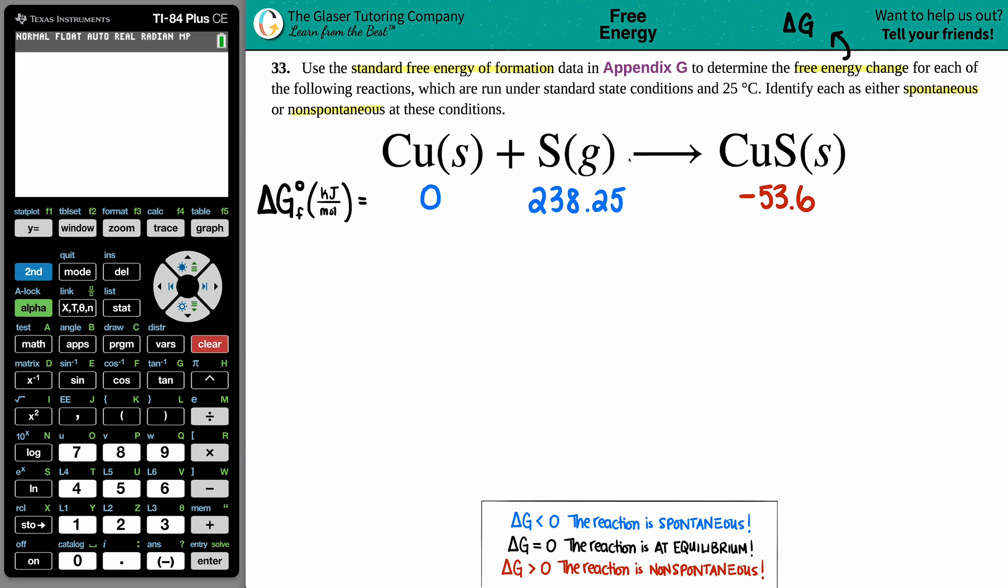Since they didn't give us any numbers, we had to go to the back of the textbook. In this case, Appendix G, but it could be different for your textbook. I had to go in the back to find out what the individual standard free energy values were. Now, since we're under standard state conditions, that means we can use the standard values in the back of the book, and we're finding a delta G naught. Anytime you see that naught value, that just means you're at standard state.